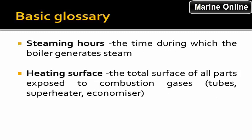Basic glossary: operating pressure, boiler efficiency — the time during which the boiler generates steam. Heating surface: the total surface of all parts exposed to combustion gases, including tubes, superheater, and economizer. Generating surface: a part of the surface in which water is heated and steam is generated, including the drum.